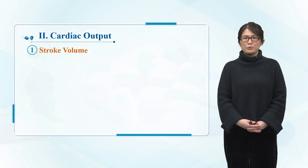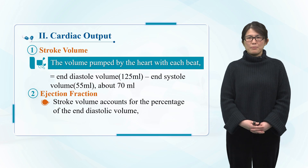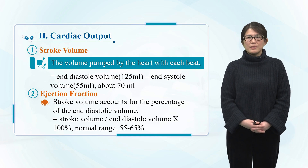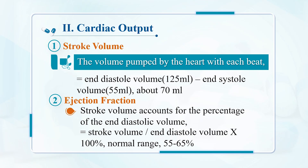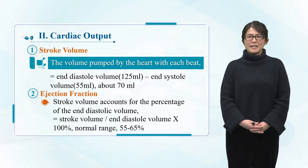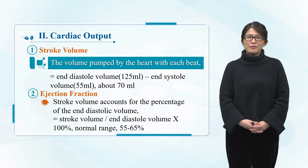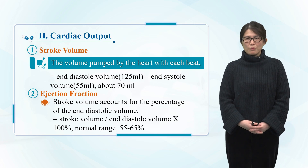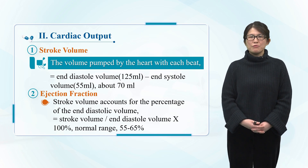Stroke output refers to the amount of blood injected by one ventricle in one heartbeat, referred to as stroke volume. In a normal adult, the end-diastolic volume of the left ventricle is about 125 mL, and the end-systolic volume is about 55 mL. The difference between the two is the stroke volume, about 70 mL. Not all the blood filled in the ventricle is ejected. The stroke volume as a percentage of the end-diastolic volume of the ventricle is called the ejection fraction.